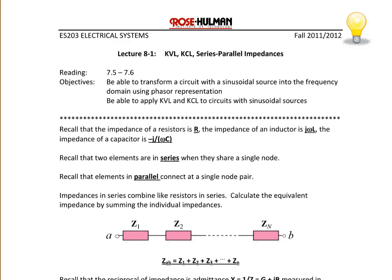Impedances in series combine like resistors in series. To find the equivalent impedance of series impedances, you add them together. So for N impedances in series, Z_AB would be Z1 plus Z2 plus Z3 and so on.